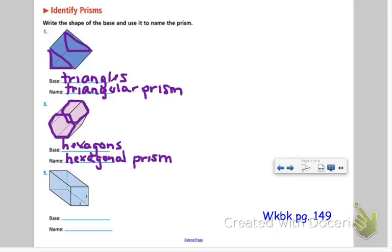And number five, well, we have several rectangles again. In fact, we have four rectangles because they're going around these two squares. So our bases here are squares. And since we have square bases, we would call this a square prism.